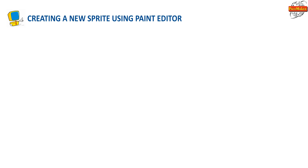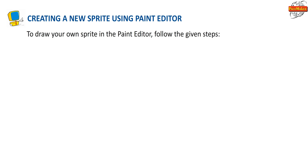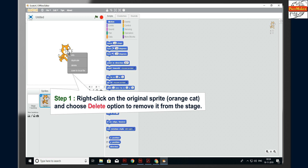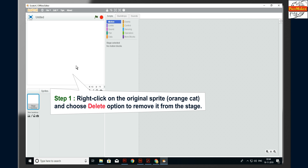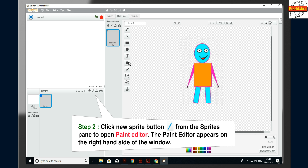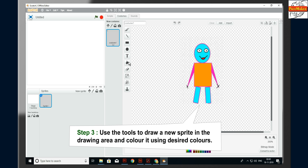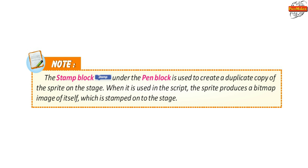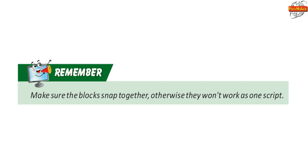To draw your own sprite in the Paint Editor, follow these steps. Step 1: right-click on the original sprite, the Orange Cat, and choose Delete to remove it from the stage. Step 2: click the New Sprite button from the Sprite's pane to open the Paint Editor. Step 3: use the tools to draw a new sprite in the drawing area and color it using desired colors. Note: the Stamp block under the Pen block is used to create a duplicate copy of the sprite on the stage; when used, the sprite produces a bitmap image of itself stamped onto the stage.